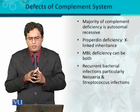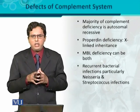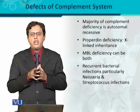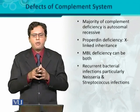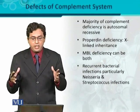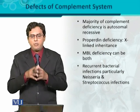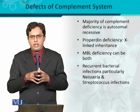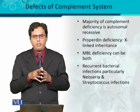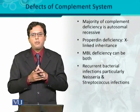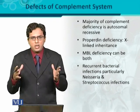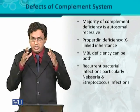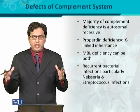As a result of complement deficiency, recurrent bacterial infections occur — particularly from gram-positive and gram-negative bacteria. Among gram-negative bacteria, Neisseria is very important, being involved in multiple infections such as meningitis and other soft tissue infections. Similarly, Streptococcus — such as Streptococcus pneumoniae — causes pneumonia. Such infections are more common in immunodeficient states where complement deficiency is present.